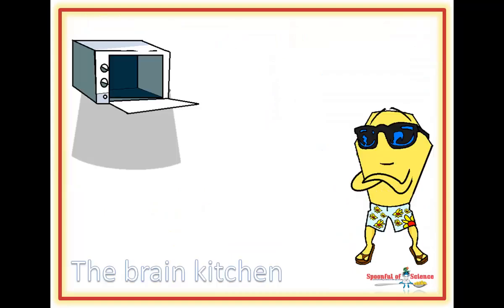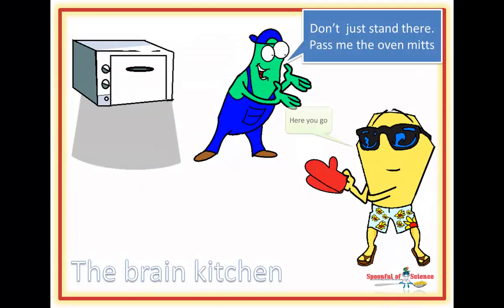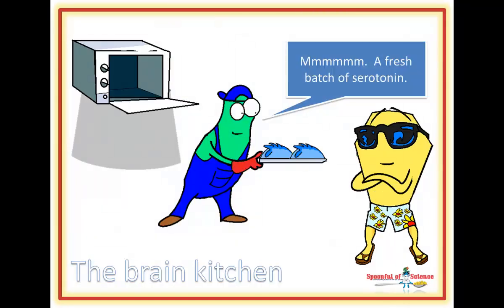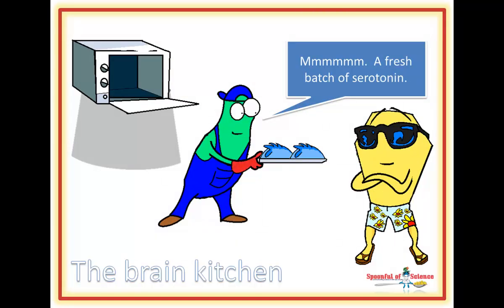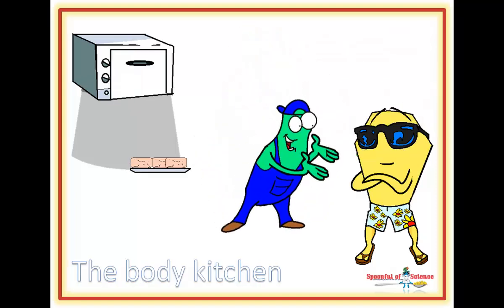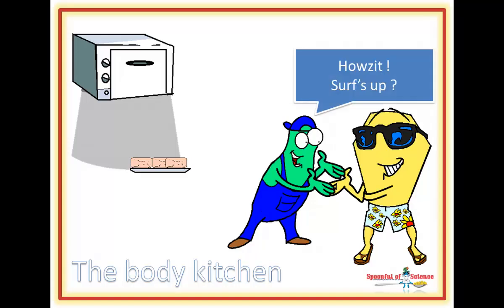The brain TPH gets cooking when vitamin D pops into the kitchen. The body TPH on the other hand stops cooking when vitamin D pops into the kitchen. He is fascinated by surfing, so he ends up interacting with vitamin D instead of getting on with the cooking.